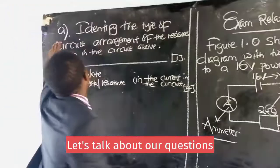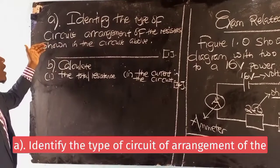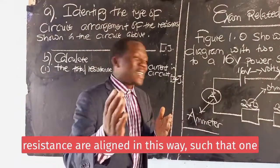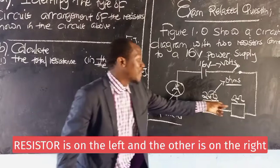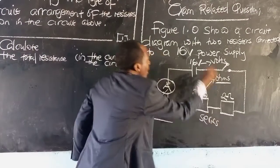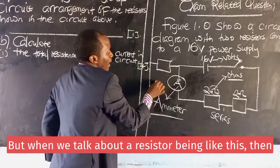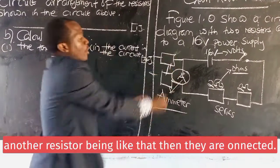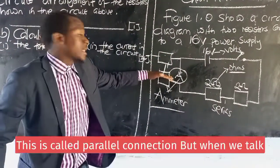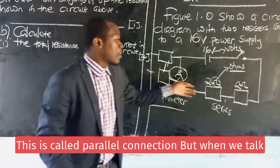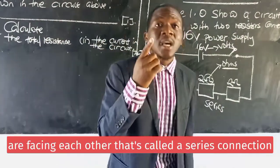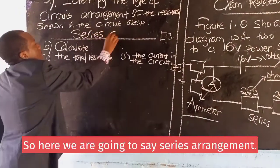Question 3.f: Identify the type of circuit arrangement of the resistors shown in the circuit above. When the resistors are aligned such that one resistor is on the left and the other is on the right under the same line, this is called series arrangement. But when one resistor is on the upper position and the other is on the bottom position and they are connected, this is called parallel connection. When resistors are on the same line addressing each other, that is called a series connection.